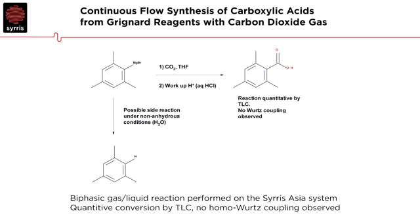So in this reaction, we're taking our Grignard reaction, which is this 2-mesotolyl-magnesium-bromide. We're going to introduce carbon dioxide in a biphasic gas-liquid partition, and acidify to form our acid. Under flow conditions, we're eliminating all moisture, so we're eliminating by-products in this reaction as well, such as hydrolysis of the Grignard reagents.